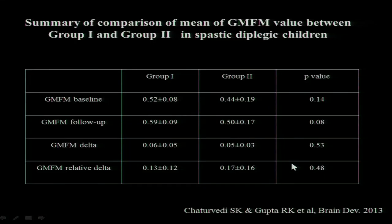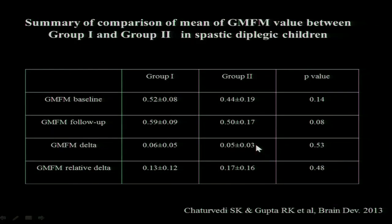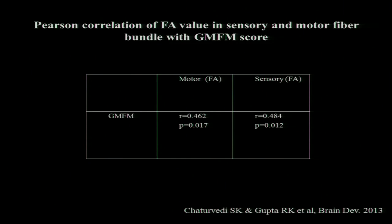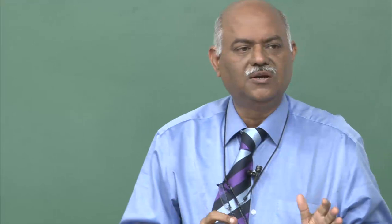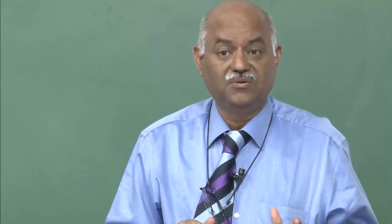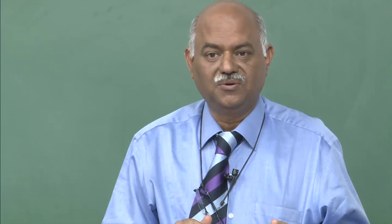The GMFM score baseline versus follow-up shows improvement in both groups — not statistically significant but still present. The clinical score and imaging score did not show much difference between groups. The Pearson correlation of sensory and motor bundles with scores showed correlation of FA values with GMFCS score. We concluded that children with identical disease may not need botox — a big relief to patients. Physiotherapy done well is as good as physiotherapy combined with botox.